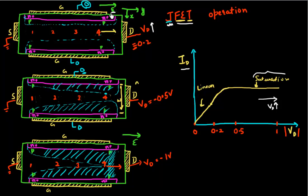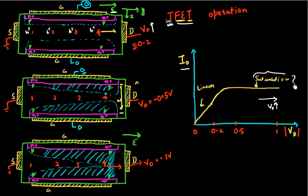I'm increasing my drain voltage, meaning I'm increasing my electric field in the y direction. So my holes, which are present inside the channel, they should get accelerated more because there's more electric field present. So how is this current remaining constant?